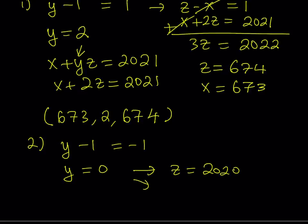And from the second equation, if y = 0, we get x = 2021. This gives us another ordered triple: (2021, 0, 2020).